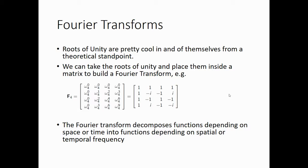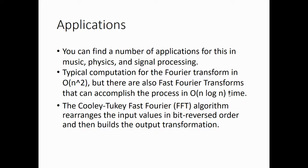So roots of unity are pretty cool in and of themselves from a theoretical standpoint. We can take these roots of unity, place them inside a matrix to build a Fourier transform. And this Fourier transform decomposes functions depending on space or time into functions depending on spatial or temporal frequency. And you can find a number of applications in music, physics, and signal processing. Now, typical computation of the Fourier transform is O of n squared, but there are also fast Fourier transforms that can accomplish the process in O of n log n time. And one of those is the Cooley-Tukey fast Fourier transform algorithms, which works by rearranging the input values in bit reversed order and then builds the output transformation. And it's pretty slick.